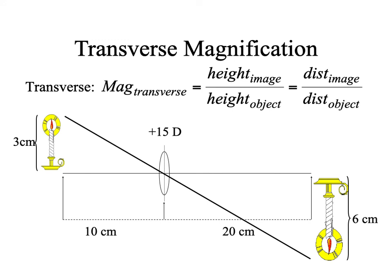To demonstrate this, we draw two central rays — one from the base of the candle and one from the tip of the candle. We see that we have two similar triangles, and the ratios of the heights are equal to the ratios of the bases.